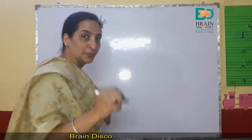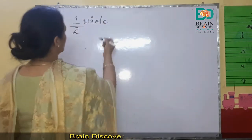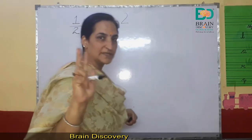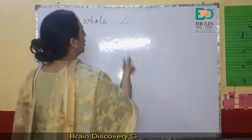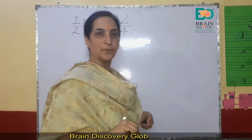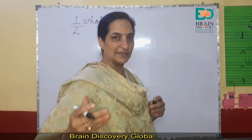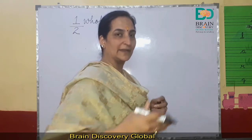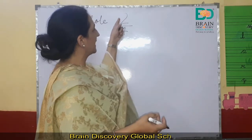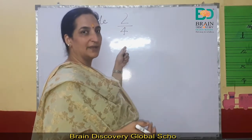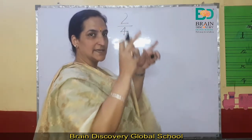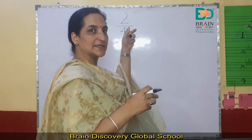Similarly, on your birthday, your mother gives you two pizzas, and you have four friends. So you have to divide that pizza among four of your friends, including you. So how will you write this? Two by four. So, two is a whole — it is a complete thing.